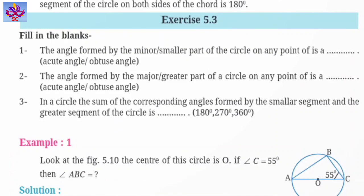So first is given, the angle formed by the minor or smaller part of the circle on any point of is a blank - acute angle or obtuse angle. किसी circle के minor या smaller part से, circle के किसी point पर बनने वाला जो angle है, वो acute angle होता है या obtuse angle. तो minor या smaller part से जो angles बनते हैं, वो acute angle होते हैं. So यहाँ पर हम fill करेंगे acute angle.